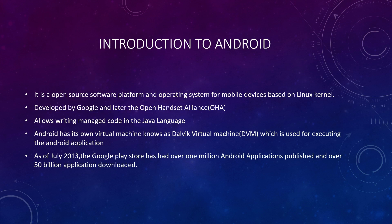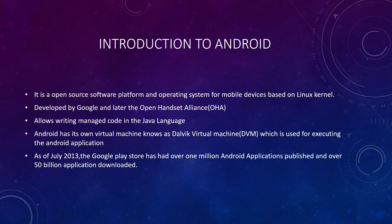Android is an open source software platform and operating system for mobile devices, based on the Linux kernel, developed by Google. It allows writing managed code in the Java language and has its own virtual machine called the DVM — the Dalvik Virtual Machine — which is used for executing Android applications. As of July 2013, the Google Play Store had over 1 million Android applications published, and around 50 billion applications were downloaded.